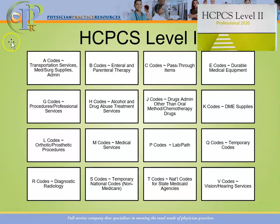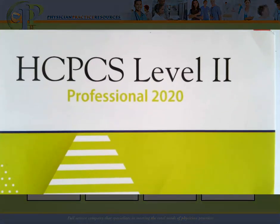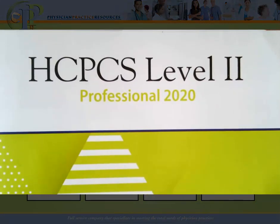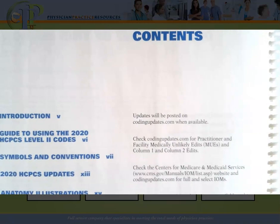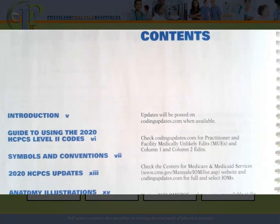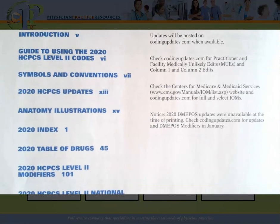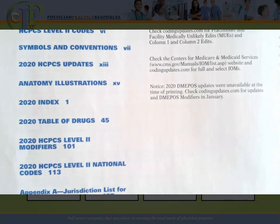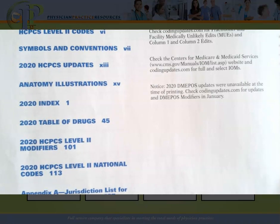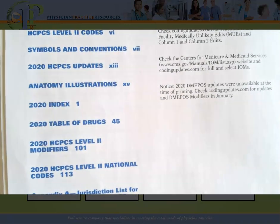Now let's take a look at the actual HCPCS manual itself. If you've been introduced to the CPT manual, HCPCS looks very similar. I recommend that you always take a look at the table of contents for every code manual you're looking at, because the table of contents will tell you what page something is on. Of note, there are not a lot of codes here — it's not as big as CPT, which has about 7,000 codes. The HCPCS manual is divided into an alphabetical index and a tabular list.